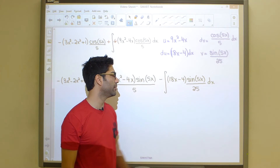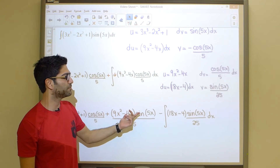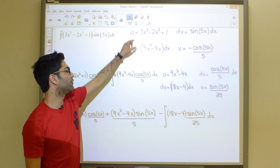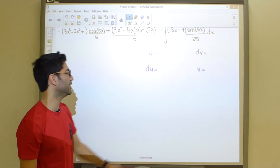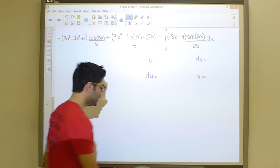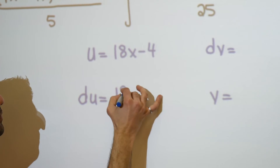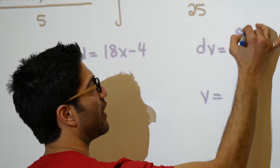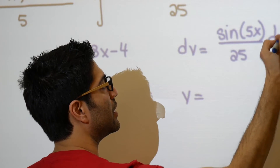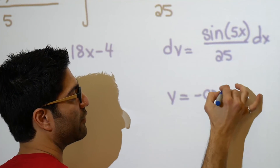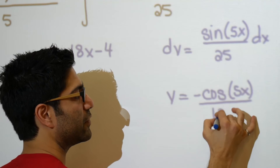It's yet another integration by parts — a polynomial multiplied by a trig function — so for a third time we calculate our ingredients, hopefully the last time. Our u is the polynomial 18x minus 4, and du = 18 dx. Our dv is sine 5x over 25, and integrating that gives negative cos 5x divided by 5, but with 25 already in the denominator it becomes negative cos 5x divided by 125.